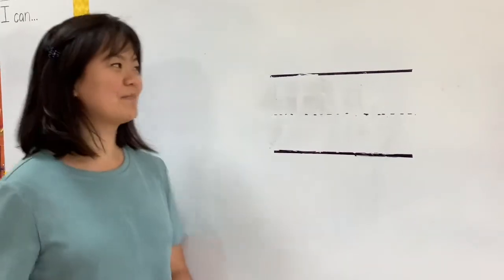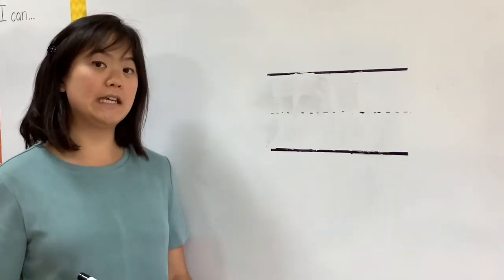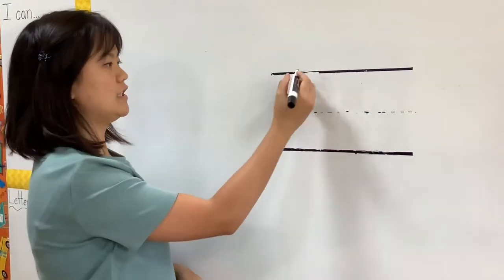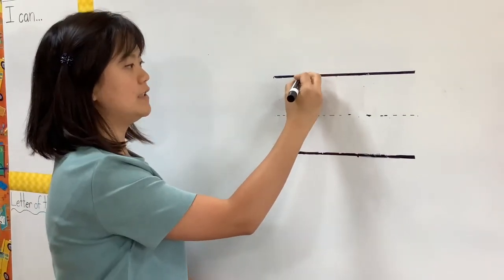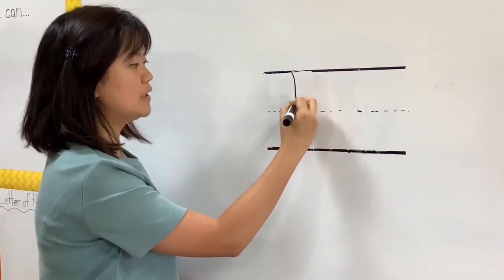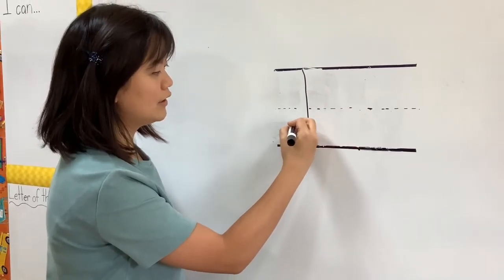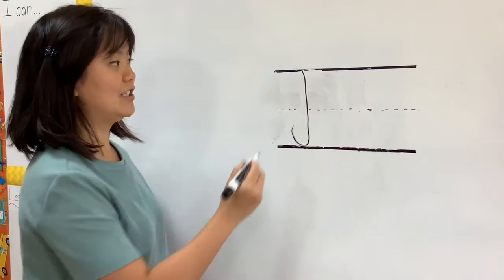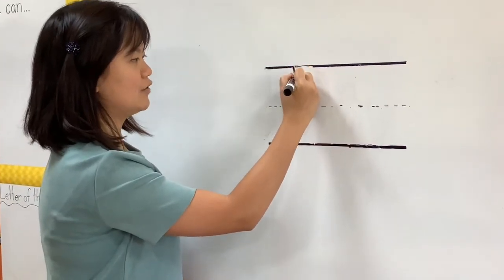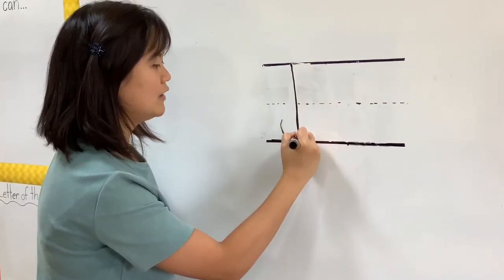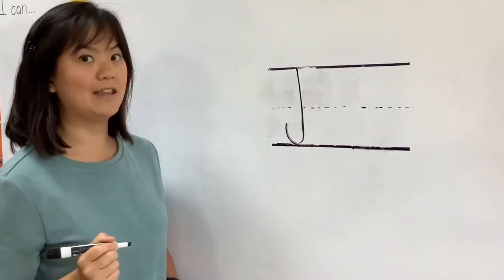Now let's write the letter J. For uppercase J, once again, it is big, so we're going to start from the top and we go down all the way to the bottom, but it doesn't stop there. We've got to give it a little hook like that. Just like jelly. So again, it goes down and a little hook like that.